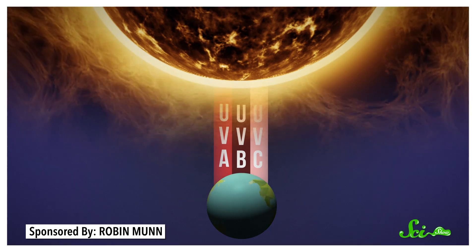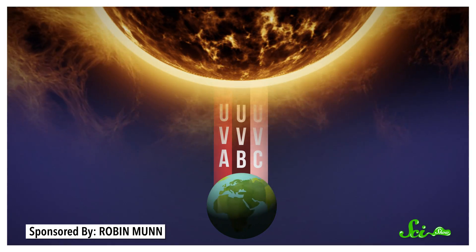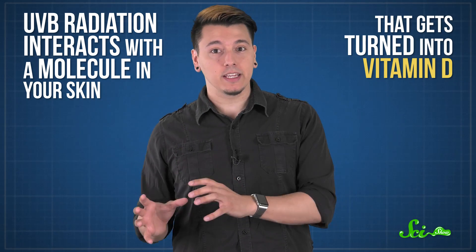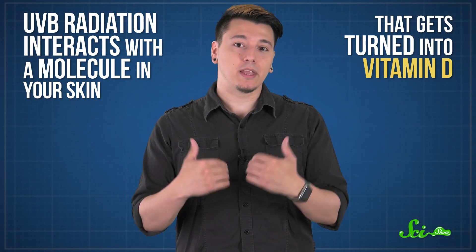Sunlight contains three types of UV radiation, including one that never quite gets through our atmosphere. That leaves two that affect our skin. Spending time outside is actually good for your skin in small doses. UVB radiation interacts with a molecule in your skin that gets turned into vitamin D, which you need to absorb calcium and keep your bones strong. But too much UVB causes damage to your cell's DNA, leading to sunburn and, ultimately, skin cancers.